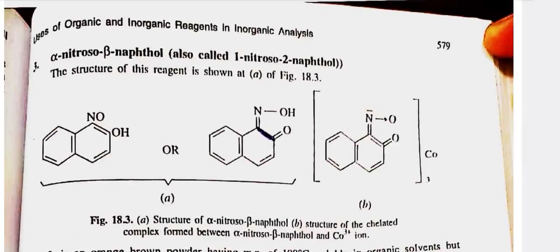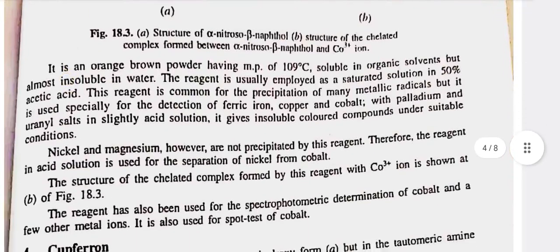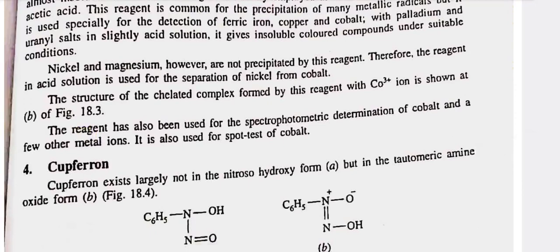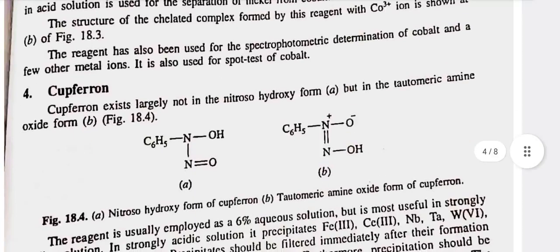Third, alpha-nitroso-beta-naphthol, also called 1-nitroso-2-naphthol — the structure of this reagent is shown in figure 18.3. It is an orange powder having a melting point of 109 degrees Celsius, soluble in organic solvents but almost insoluble in water. The reagent is usually employed as a saturated solution in 50% acetic acid. This reagent is commonly used for the precipitation of many metallic radicals but it is used specially for the detection of ferric iron, copper and cobalt, with palladium and uranyl salts in slightly acidic solution. It gives insoluble colored compounds under suitable conditions. Nickel and magnesium, however, are not precipitated by this reagent. Therefore, the reagent in acid solution is used for the separation of nickel from cobalt. The reagent has also been used for the spectrophotometric determination of cobalt and a few other metal ions, and is also used for spot tests of cobalt.